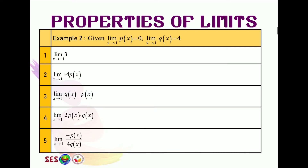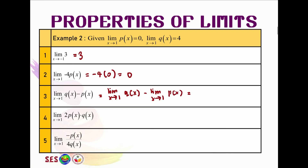Okay, now let's check your answers. The answer for the first one, by property 1, is 3. For number 2, by property 2, you can factorize minus 4 out as it's a constant, and we know the value for limit p is 0, so this equals 0. For number 3, we separate this: limit x approaching 1 for qx minus limit x approaching 1 for px — that is 4 minus 0, which equals 4. In question 4, we have a constant and multiplication; factorizing out 2 gives 2 times limit of p (which is 0) times limit of q (which is 4), so the answer is 0. Question 5 also equals 0.